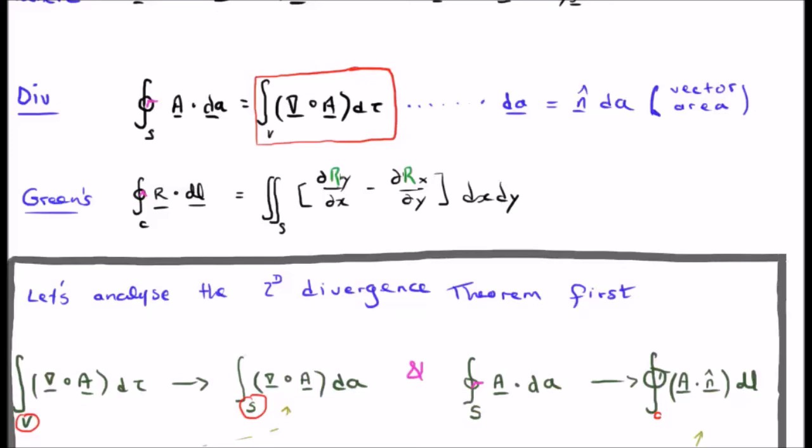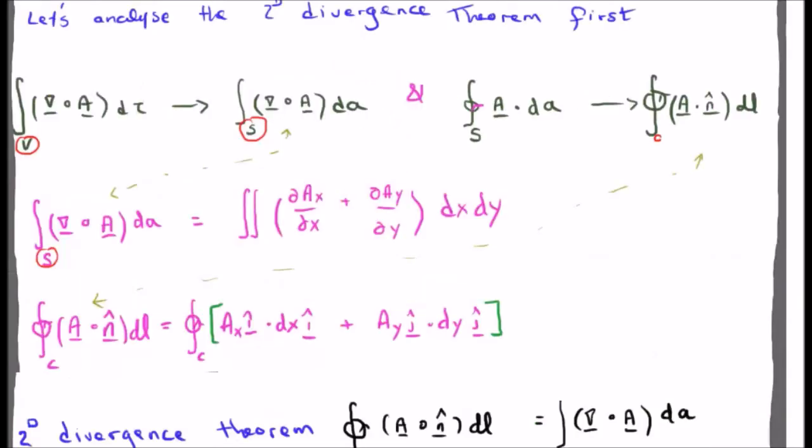If we convert this from a two dimensional function to a three dimensional function we go to a surface integral and we still have the divergence of A. So now what we have is this function here equaling this function here if we convert the divergence theorem into two dimensions.